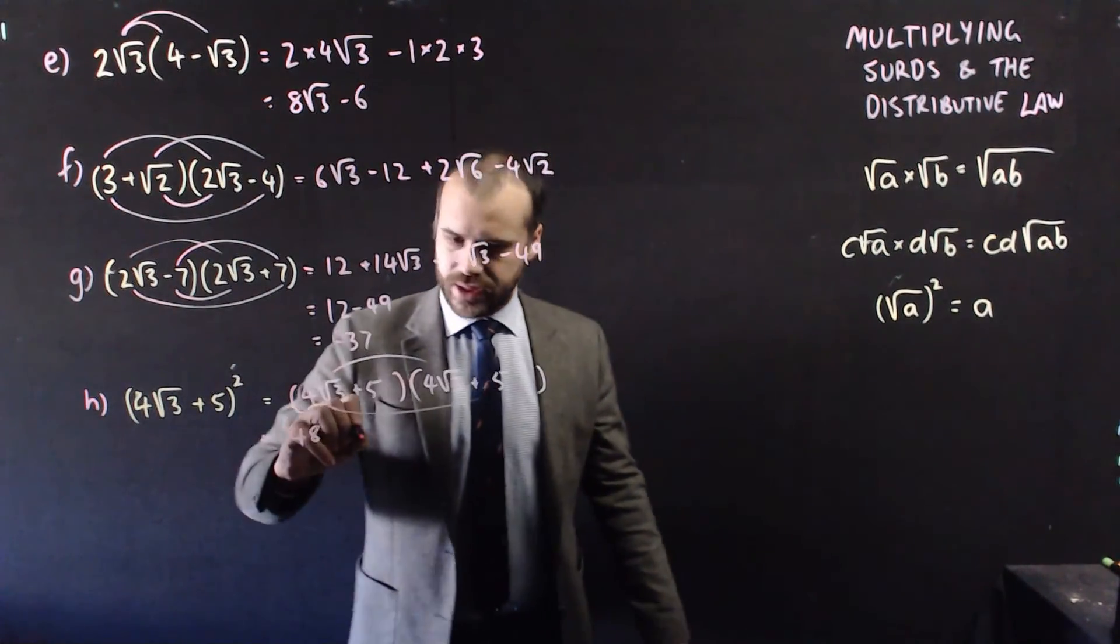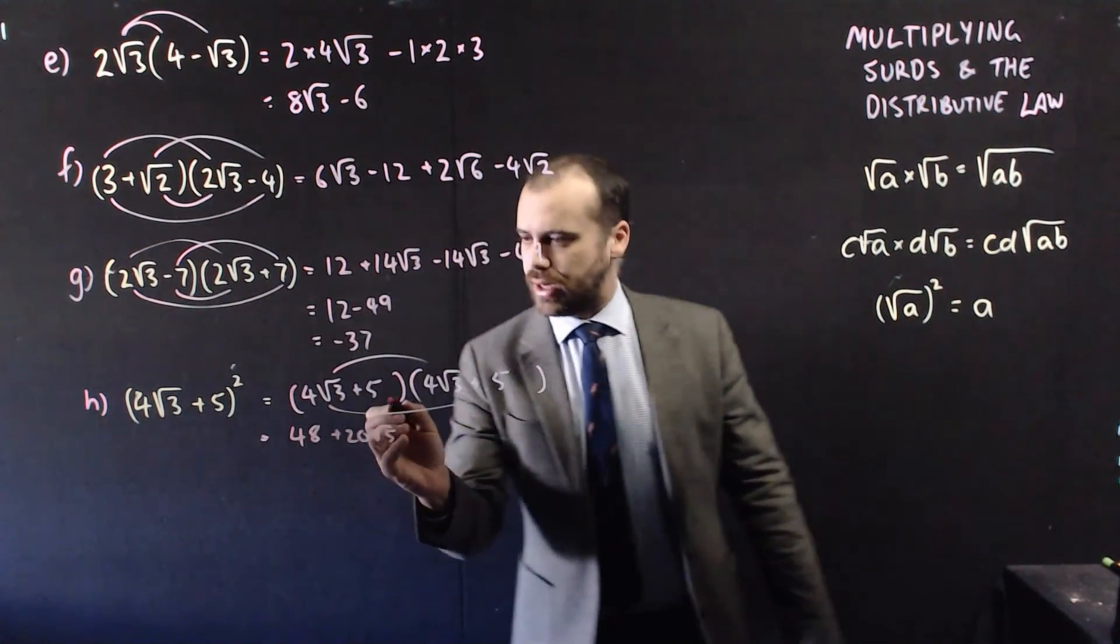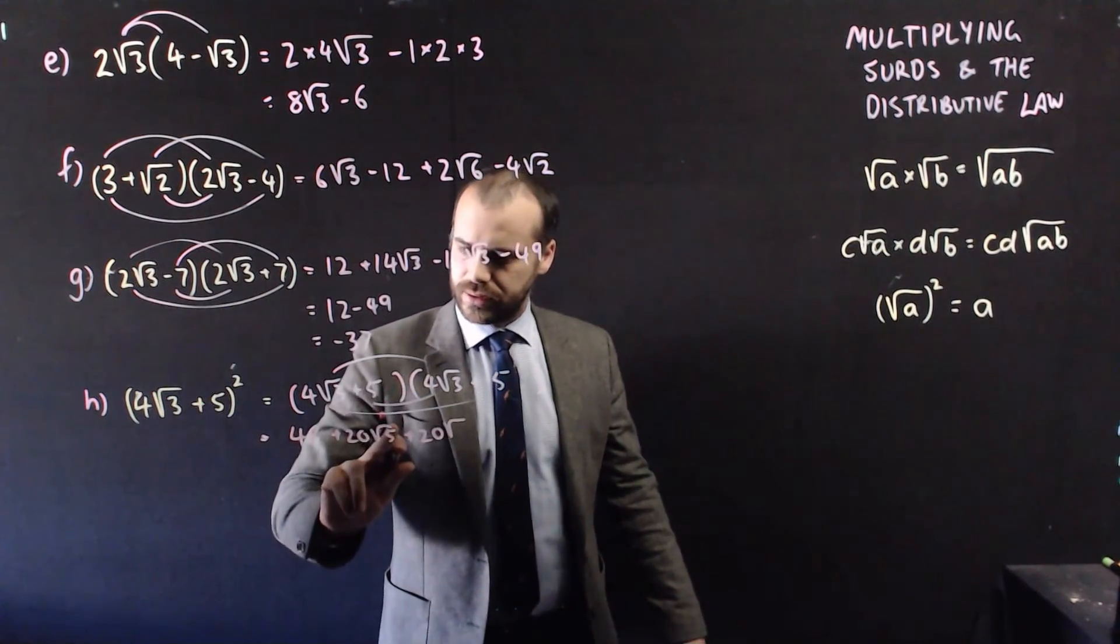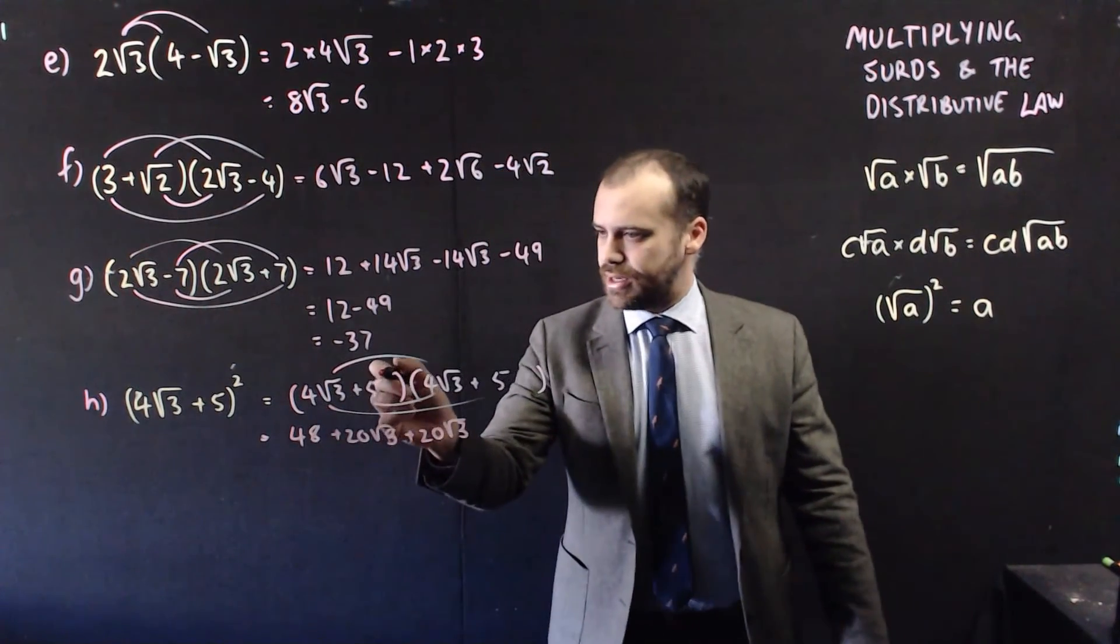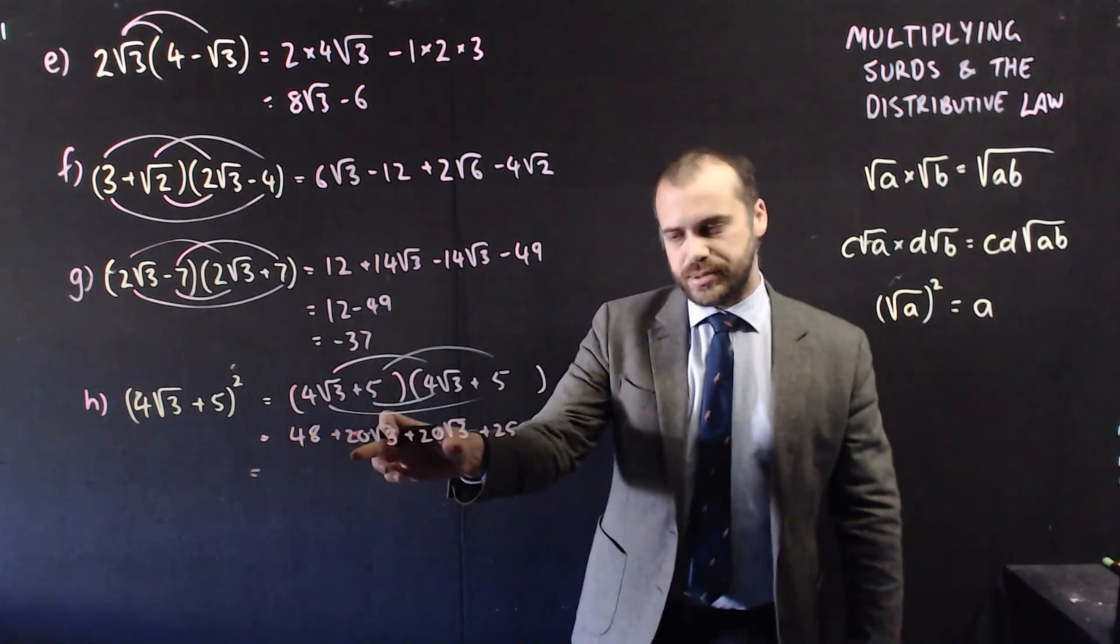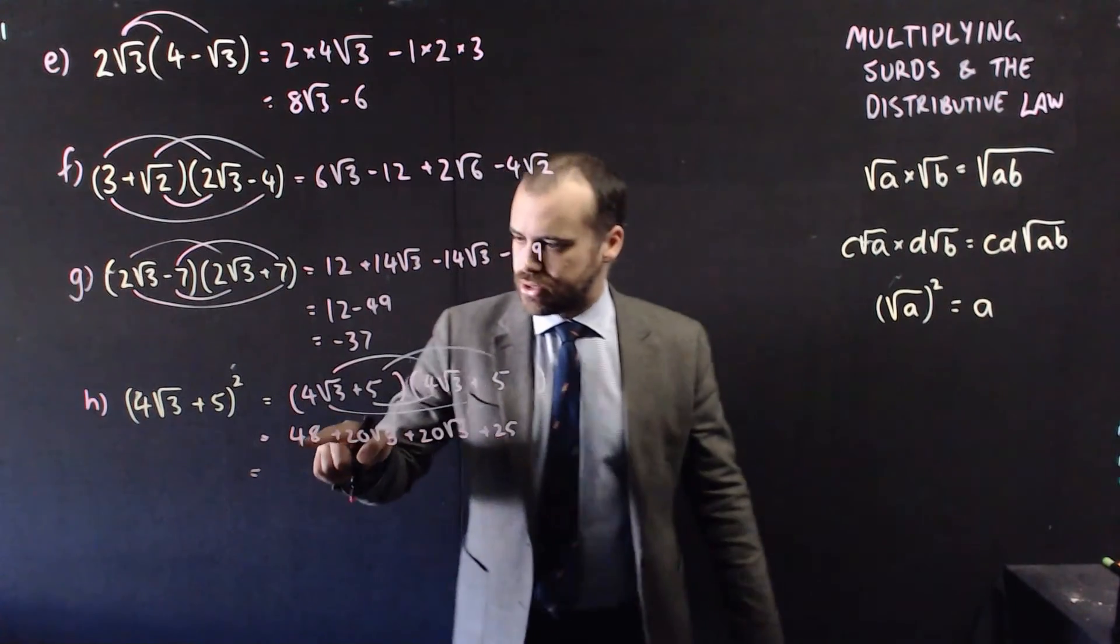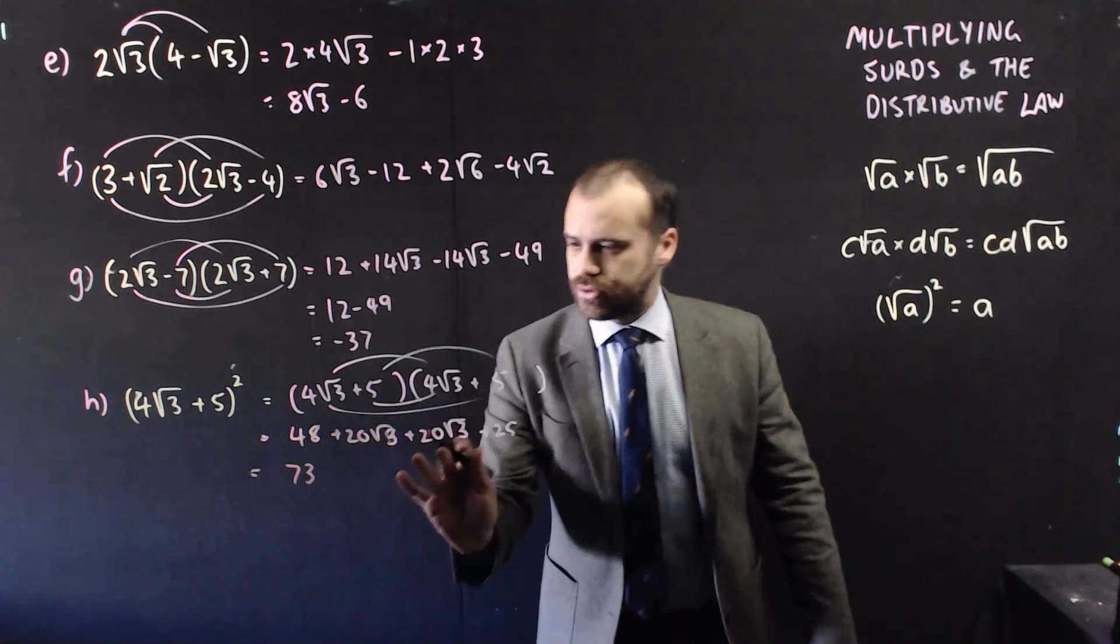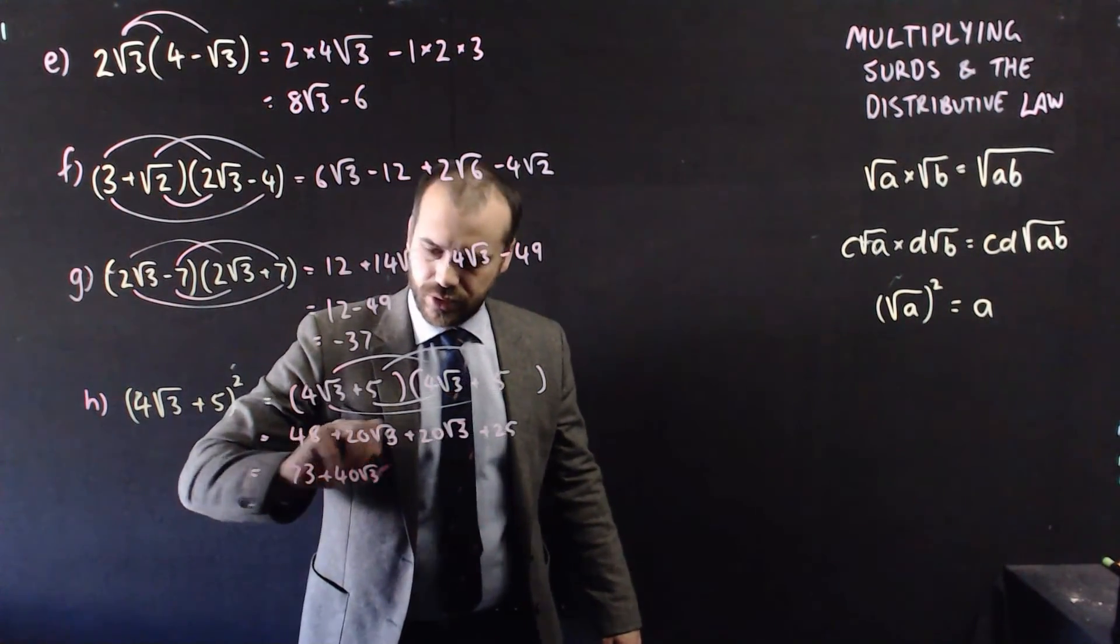4 root 3 times 5 is 20 root 3. 4 root 3, inner 20 root 3. And then outer 25. And you can see one of these terms collapses, and these terms will also come together as well. So 48 plus 25 is 73, and 20 root 3 plus 20 root 3 is 40 root 3.